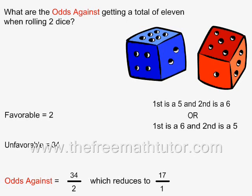Or, the red die can roll a 6, and the blue die can roll a 5, and again, we get a total of 11.